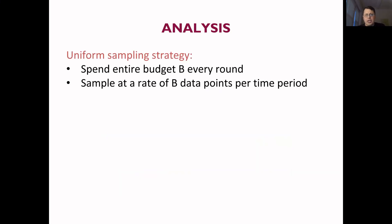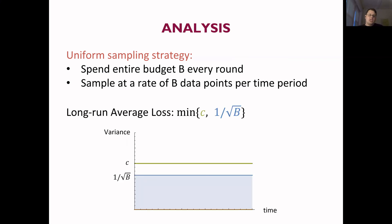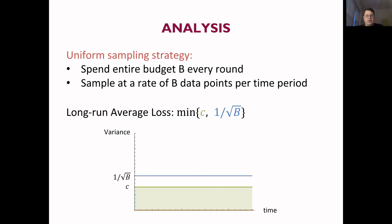So we want to come up with a good strategy. Let's start with a natural benchmark: what would happen if we didn't do anything clever with banking and just spent the entire budget every round? That would mean we simply sample at a constant rate of B data points every time period. This generates a long-run average loss of whichever is better — the variance we get by taking B samples every round, which is one over root B, or C. So if one over root B is less than C, we're guessing every round with average long-run loss of one over root B. If C is less, we're never guessing and just taking the outside option every round with average long-run payoff of C.